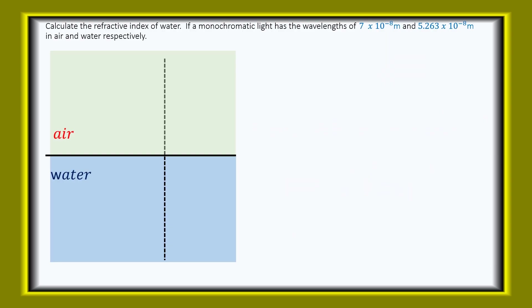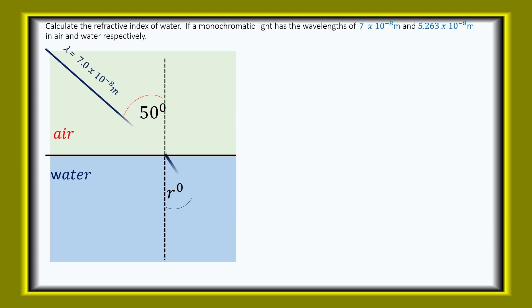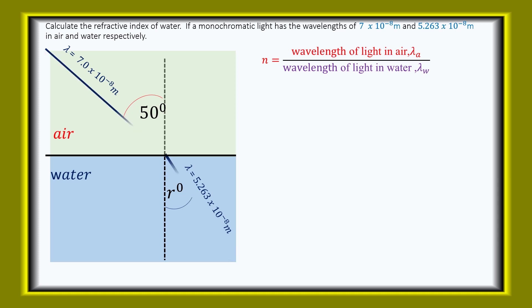Calculate the refractive index of water, if a monochromatic light has a wavelength of 7 times 10 to the minus 8 meters in air and 5.263 times 10 to the minus 8 meters in water. The refractive index of water equals wavelength of light in air over wavelength of light in water, and that gives 1.3.